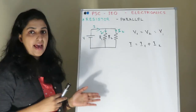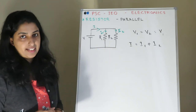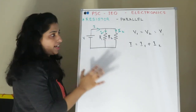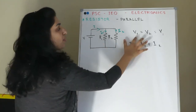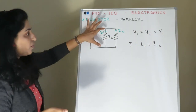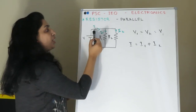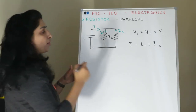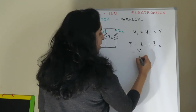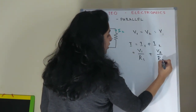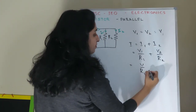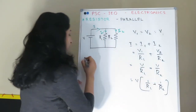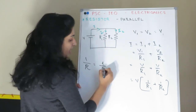For resistors in parallel: R1 and R2 are connected in parallel, so the voltage across each is the same — V1 equals V2 equals V. The total current is I equals I1 plus I2, which gives V by R1 plus V by R2. Therefore, the effective resistance is 1 by R equals 1 by R1 plus 1 by R2.